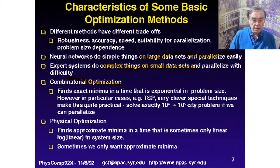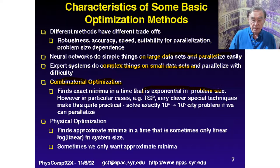Combinatorial optimization is a standard approach in computer science: look at all possibilities. You have a function that depends on some discrete parameters — just look at every possible value. You find the exact minima, but the time is exponential in the problem size. They're okay for small problems, but for large problems such as a big traveling salesman problem, you use heuristics with clever techniques that can solve quite large, though not huge, problems.